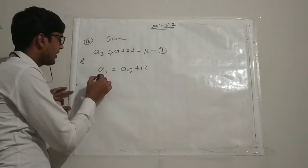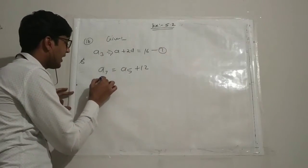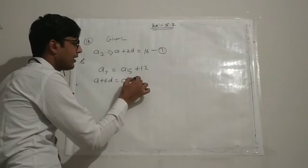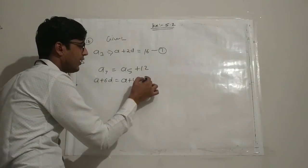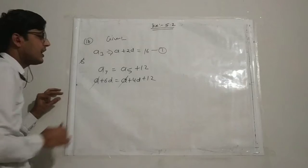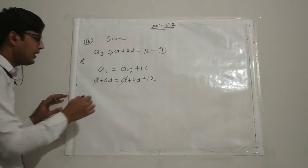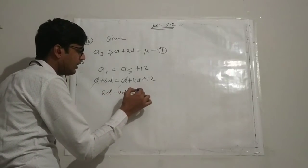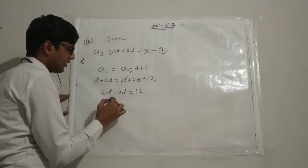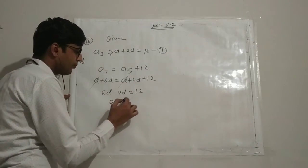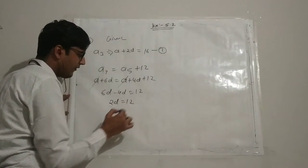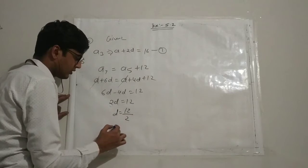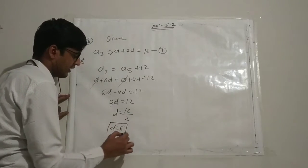Writing A7 as a plus 6d and A5 as a plus 4d, we get a plus 6d minus (a plus 4d) equals 12. The a terms cancel, so 6d minus 4d equals 12, giving 2d equals 12, therefore d equals 6.